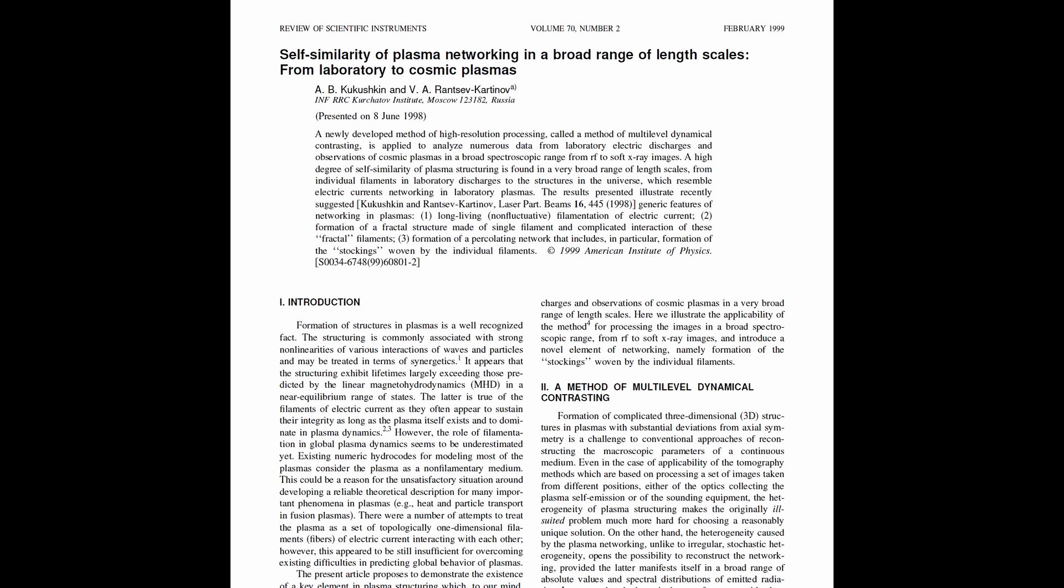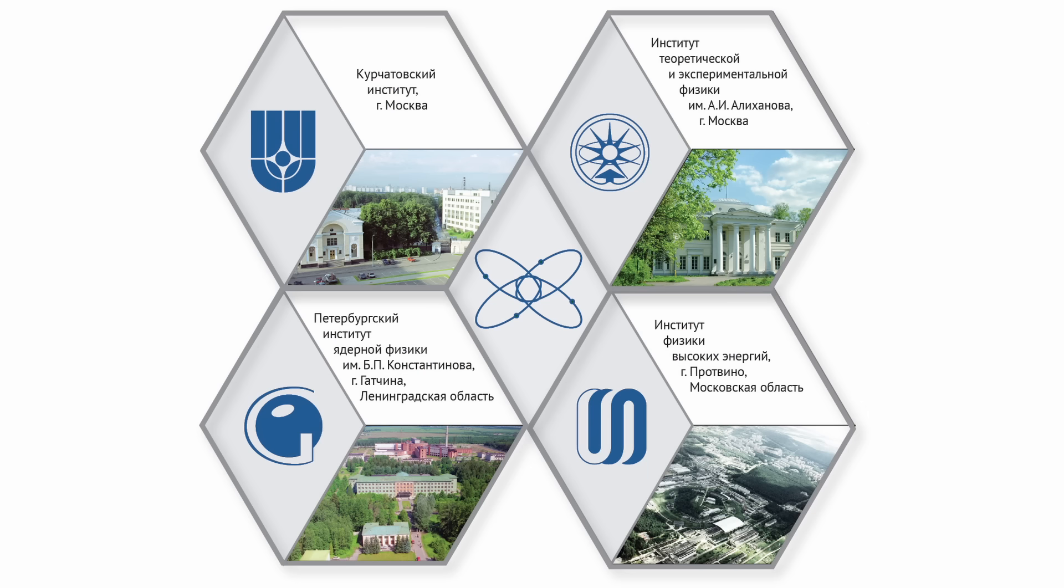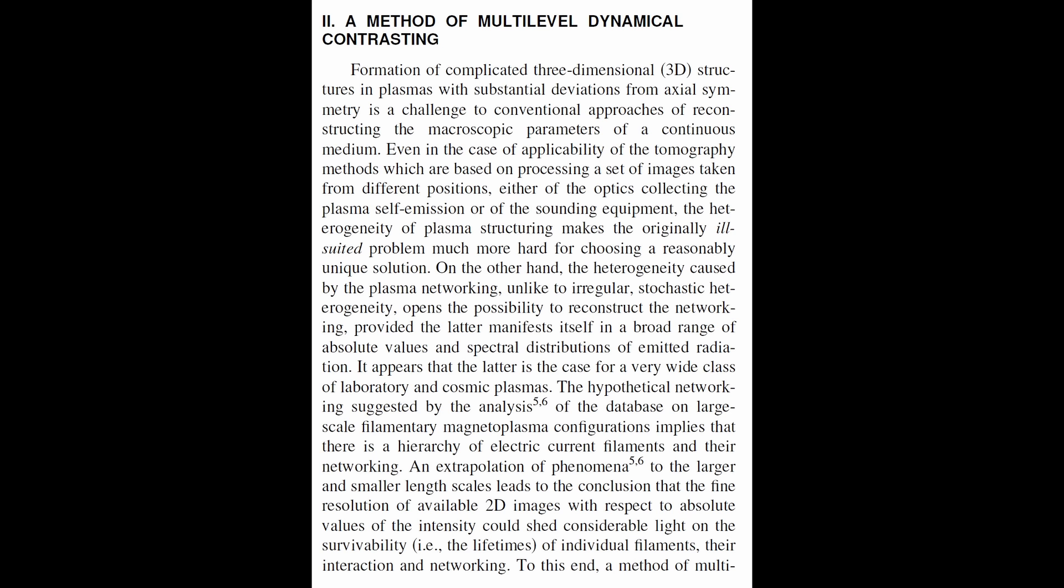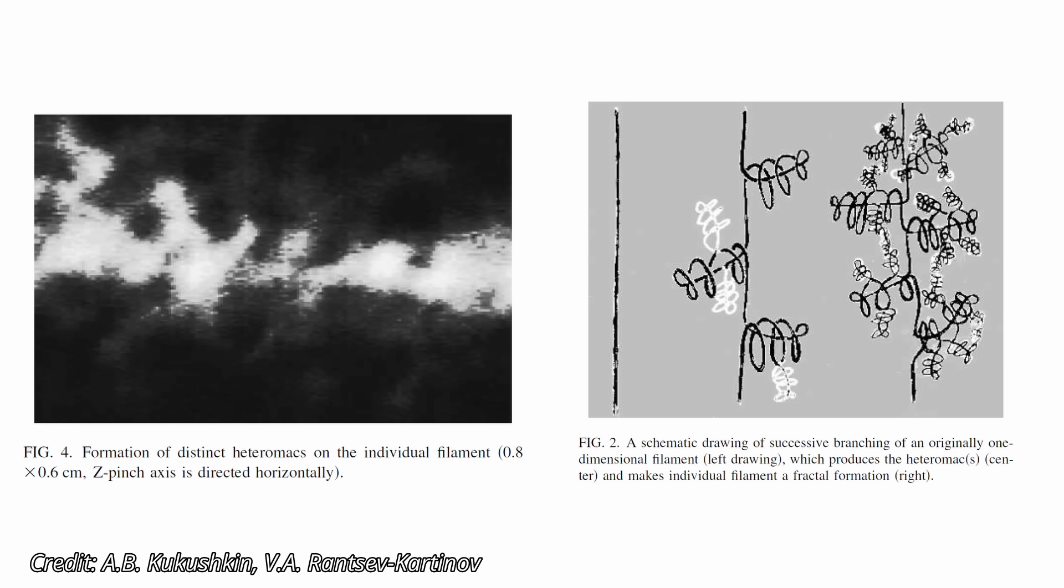One of the most striking examples of this work comes from the Kurchatov Institute in Moscow, one of the world's leading centers for plasma physics and controlled nuclear fusion research. There, A.B. Kukushkin and V.A. Ransi-Kartanov carried out a series of studies on the fine structure of plasma discharges in Z-pinch experiments. Their work was far from fringe. These experiments were among the most sophisticated and well-controlled laboratory plasmas ever produced. Ransi-Kartanov developed a technique called multi-level dynamic contrasting. It revealed intricate details in plasma that had gone unnoticed, showing a level of structure and organization no one expected.